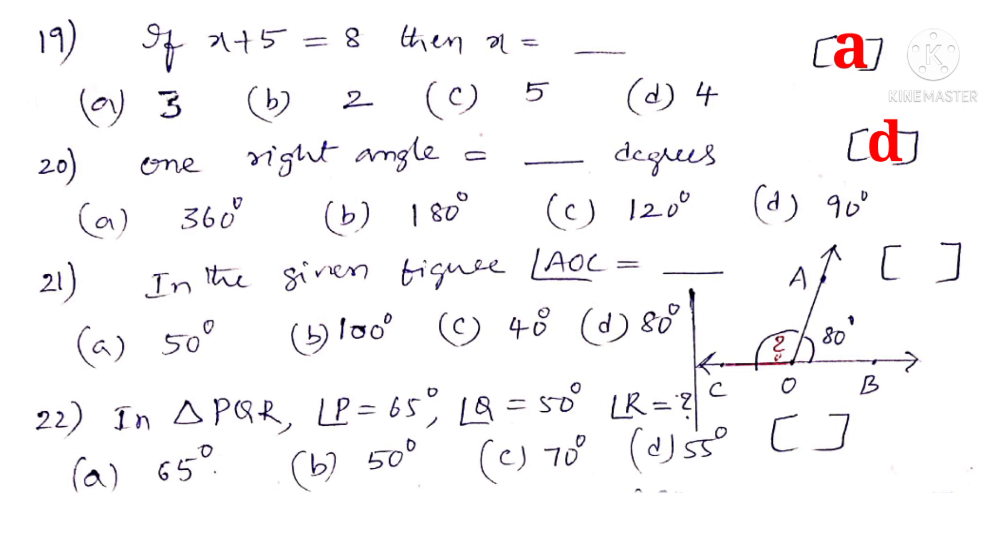21. In the given figure angle AOC is equal to dash. Observe that BOC is a straight line. So it has an angle of 180 degrees. So right side angle is 80 degrees. Then left side angle must be 100 degrees because 100 plus 80 is equal to 180. So the correct choice is B.